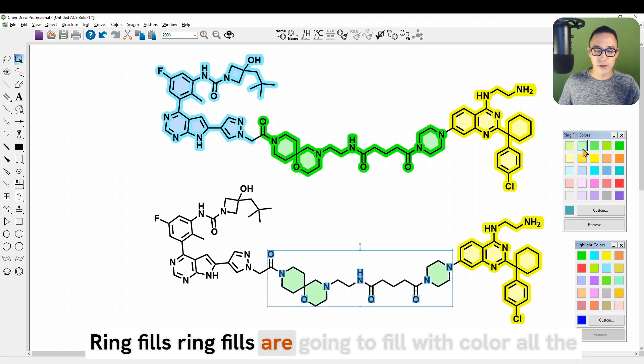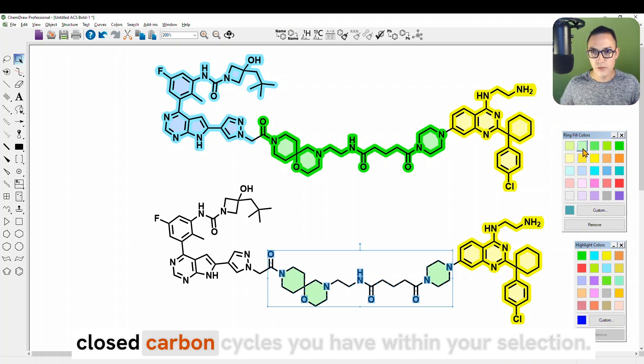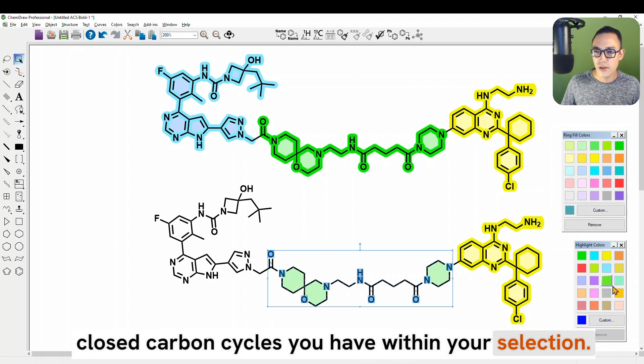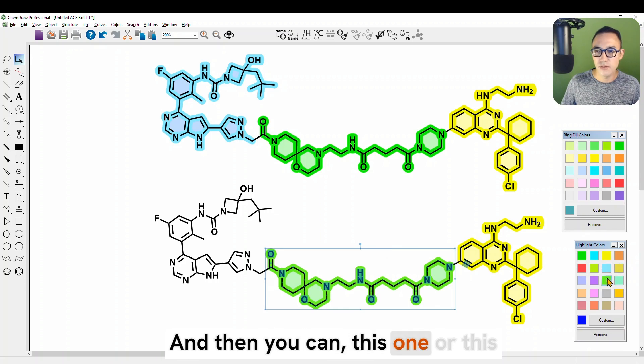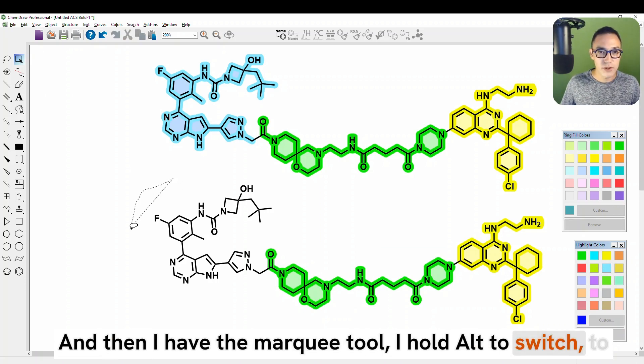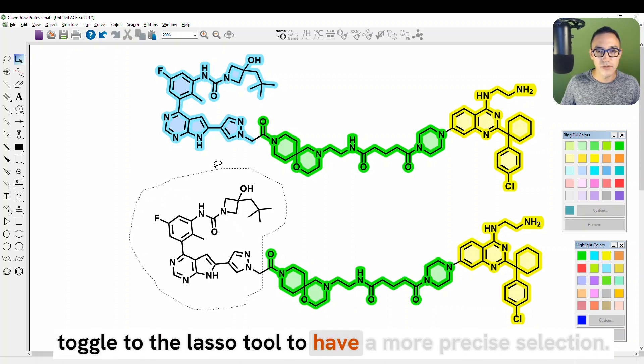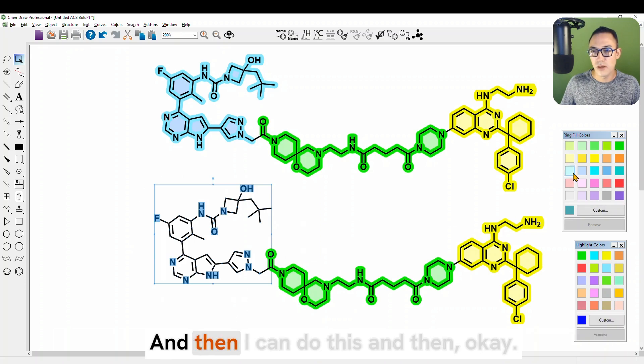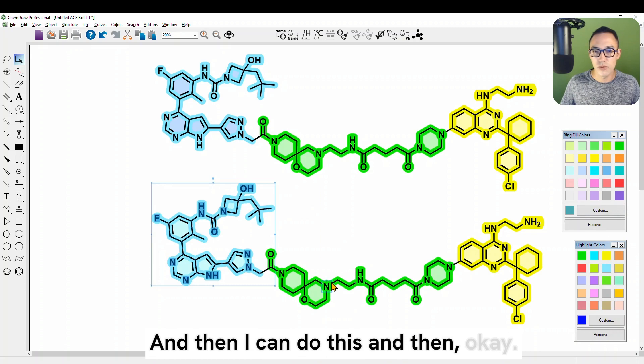Then we're going to do the same thing here. Ring fills. Ring fills are going to fill with color all the closed carbon cycles you have within your selection. And then you can use this one or this green if you want. This one looks better. And then I have the marquee tool. I hold Alt to switch to the lasso tool to have a more precise selection. And then I can do this and then this. Okay.